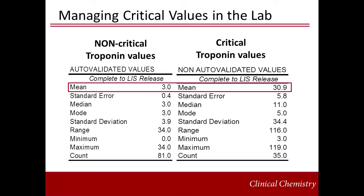How laboratories manage critical and significant results can impact the care of their patients. Simply labeling a test as critical can have an impact on turnaround time compared to normal results. In this example, our laboratory looked at non-critical versus critical troponins. The mean time to report a non-critical troponin was three minutes from the time the result was ready off the instrument until it was released in the LIS, while the critical troponin mean time to release was 31 minutes.